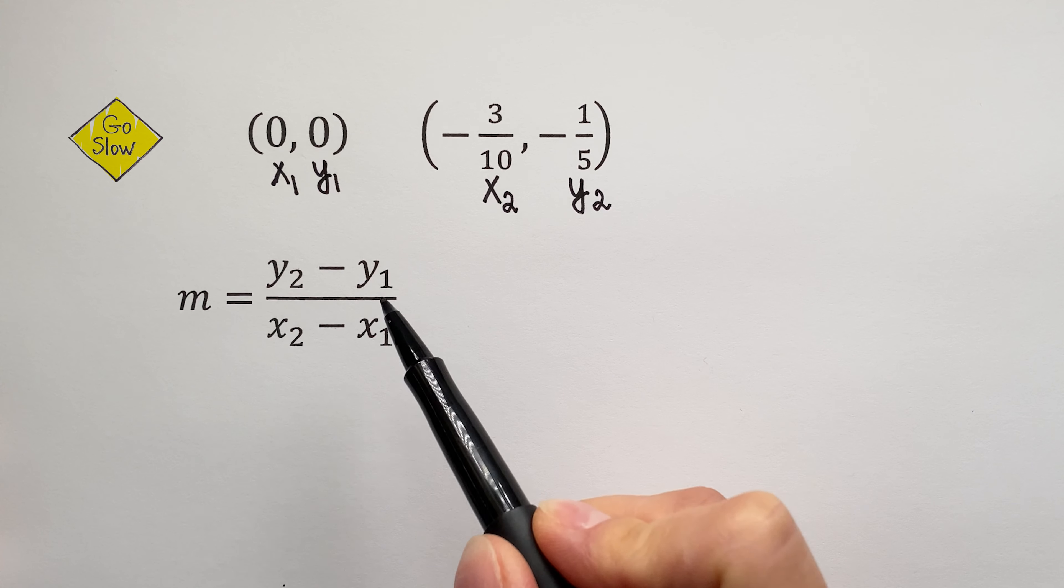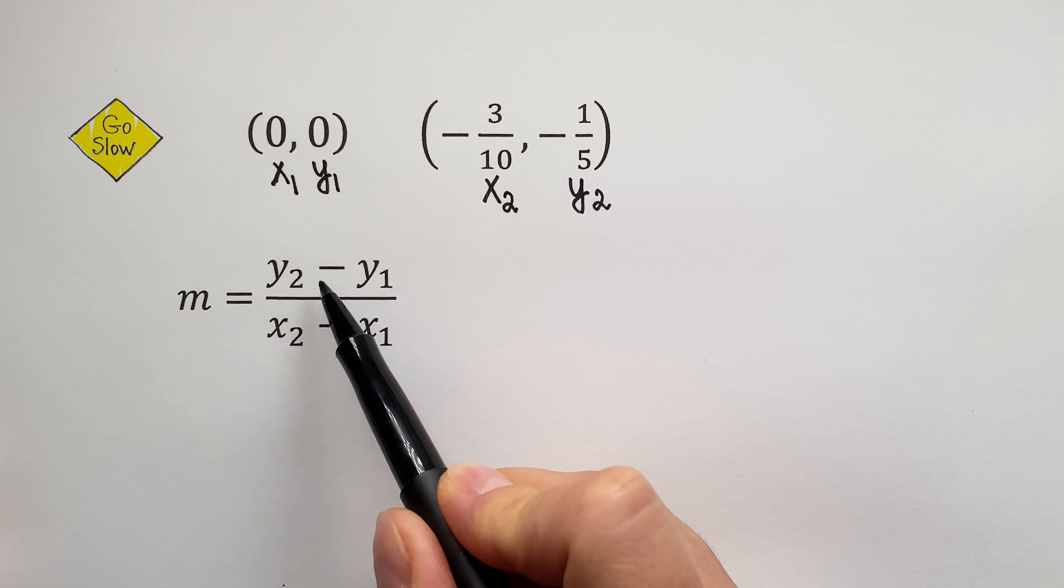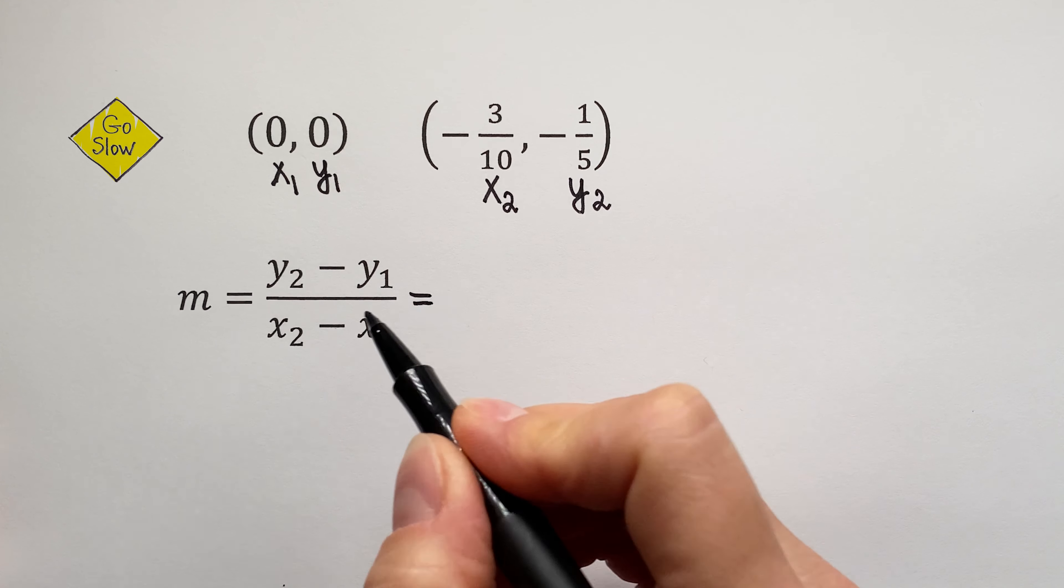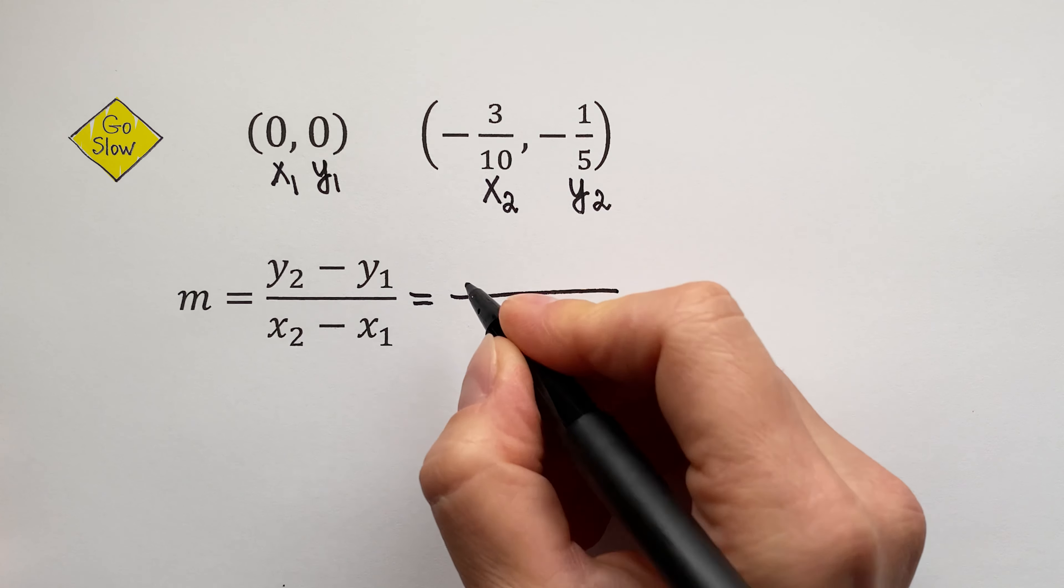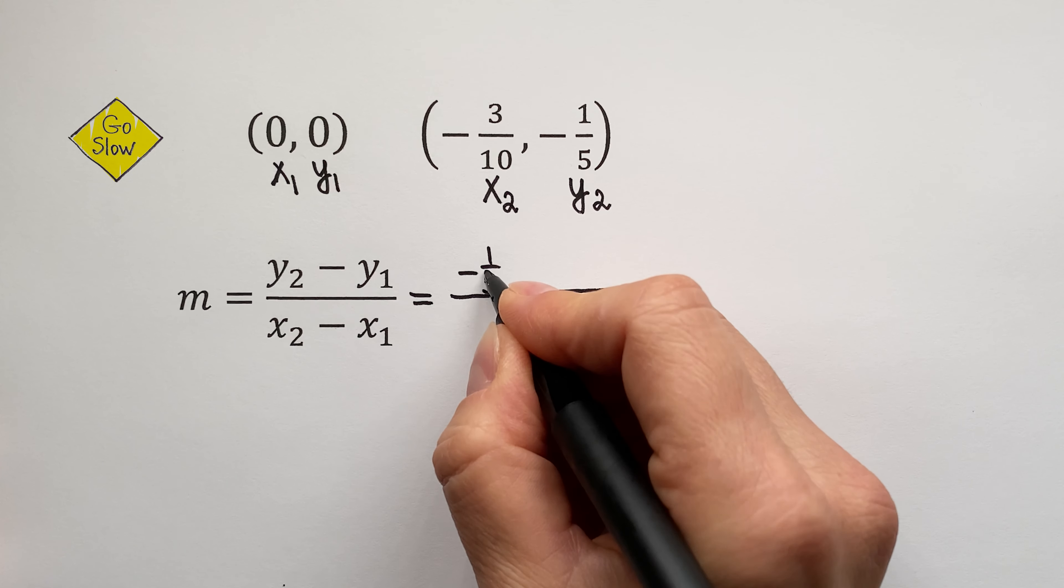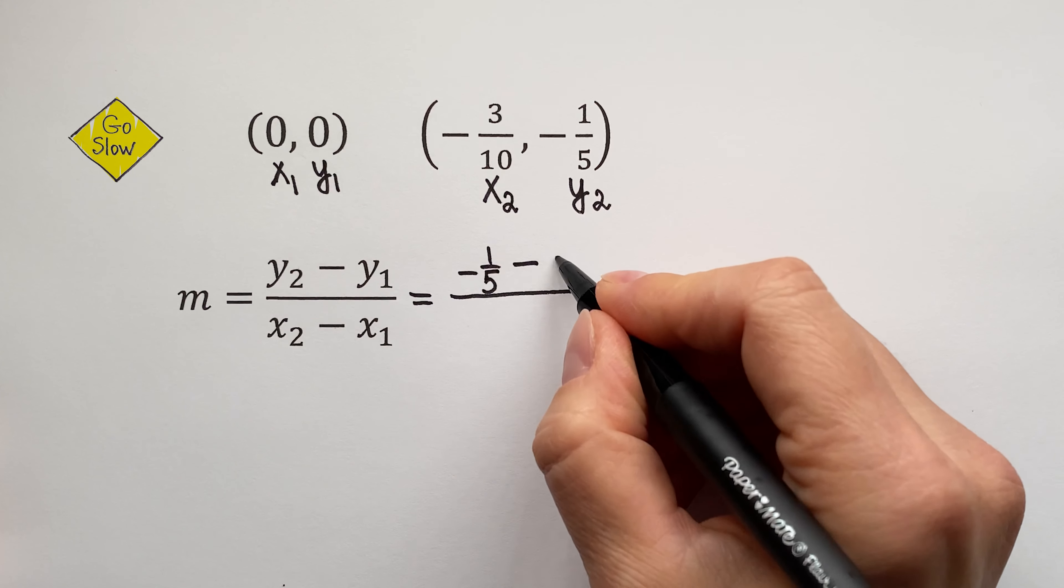Be careful! In the slope formula, you start with the y-coordinates. Let's do it! So, y2 equals negative 1 fifth, so negative 1 fifth minus y1 is 0.